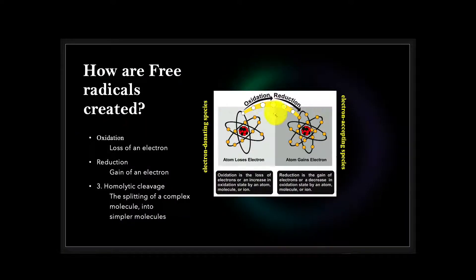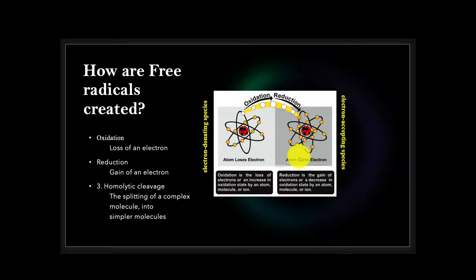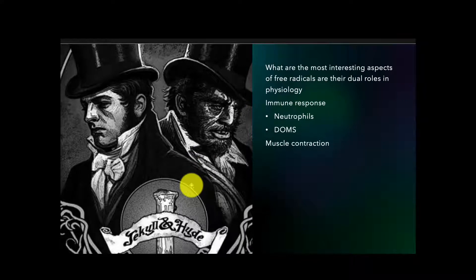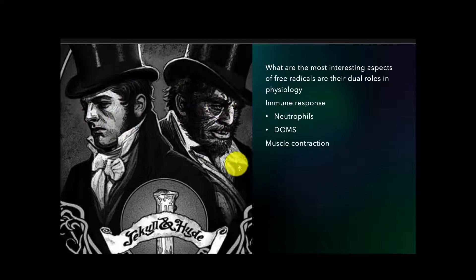If we say something becomes reduced, that means it's taken on this electron. But what's really important to understand is that the body sometimes uses free radicals for beneficial functions. Thus far I was talking about how these things are harmful, can cause damage, cause mutations. But sometimes they play a physiological role as well. I like to refer to these reactive oxygen species as Dr. Jekyll and Mr. Hyde. Dr. Jekyll would be the useful or purposeful use of free radicals, and Mr. Hyde would be the damaging or injurious effect of free radicals in the system.